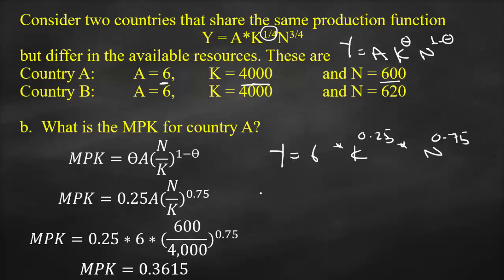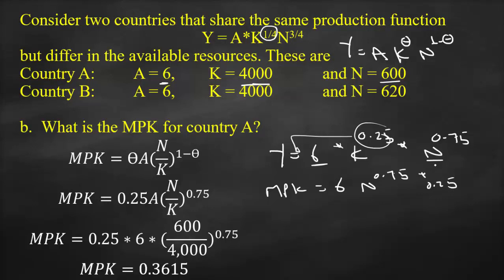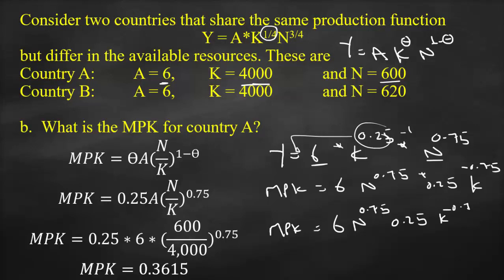Taking the first derivative with respect to K — treating other variables as constant — we get: dY/dK = 6 × N^0.75 × 0.25 × K^(0.25-1), which simplifies to MPK = 6 × N^0.75 × 0.25 × K^(-0.75).